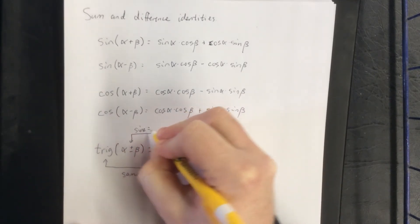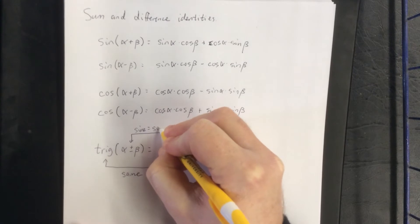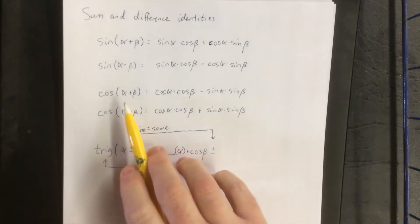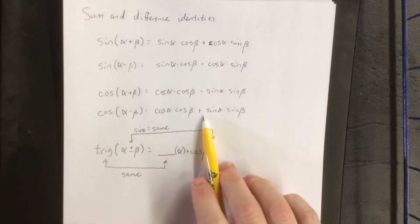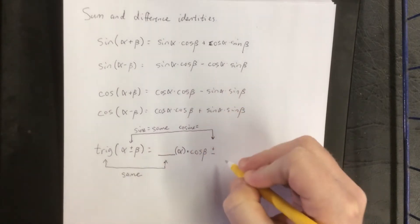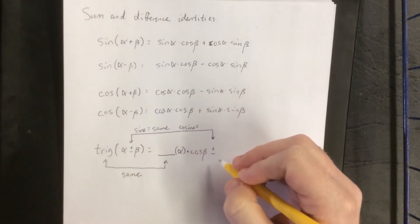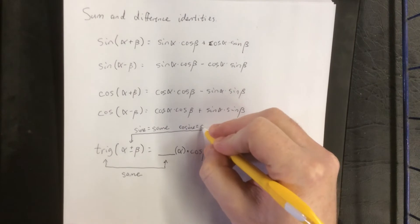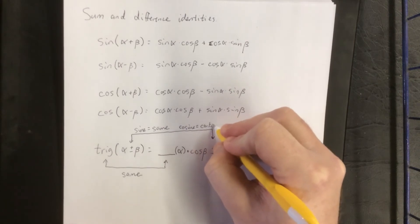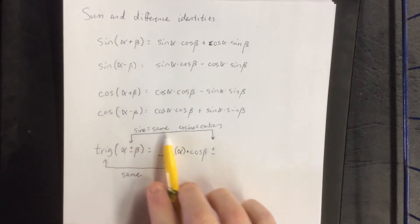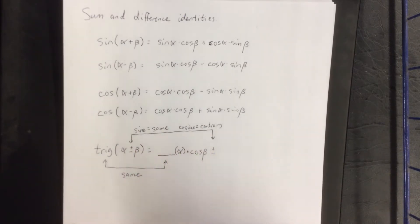So for the sine, that's going to be the same — a sum is a sum, a difference is a difference. Cosine is the opposite. I wish it were called the 'do-sine' so that we could say 'do-sine is different' or 'o-sine for opposite.' Cosine is contrary. If you can remember that sine is the same and cosine is the opposite, it'll work out pretty well.